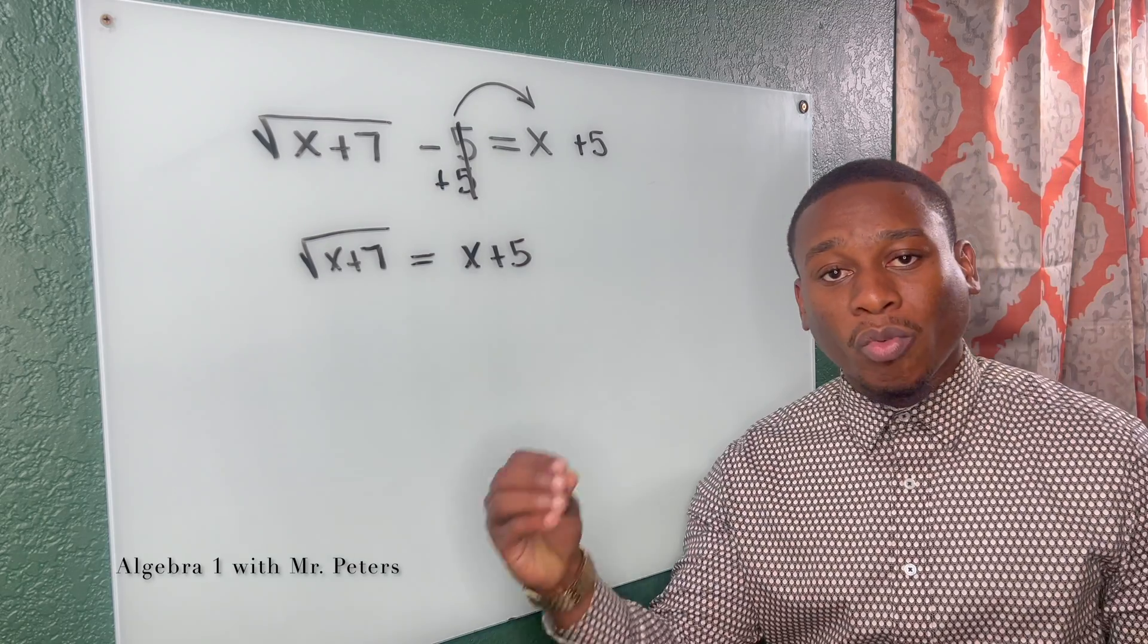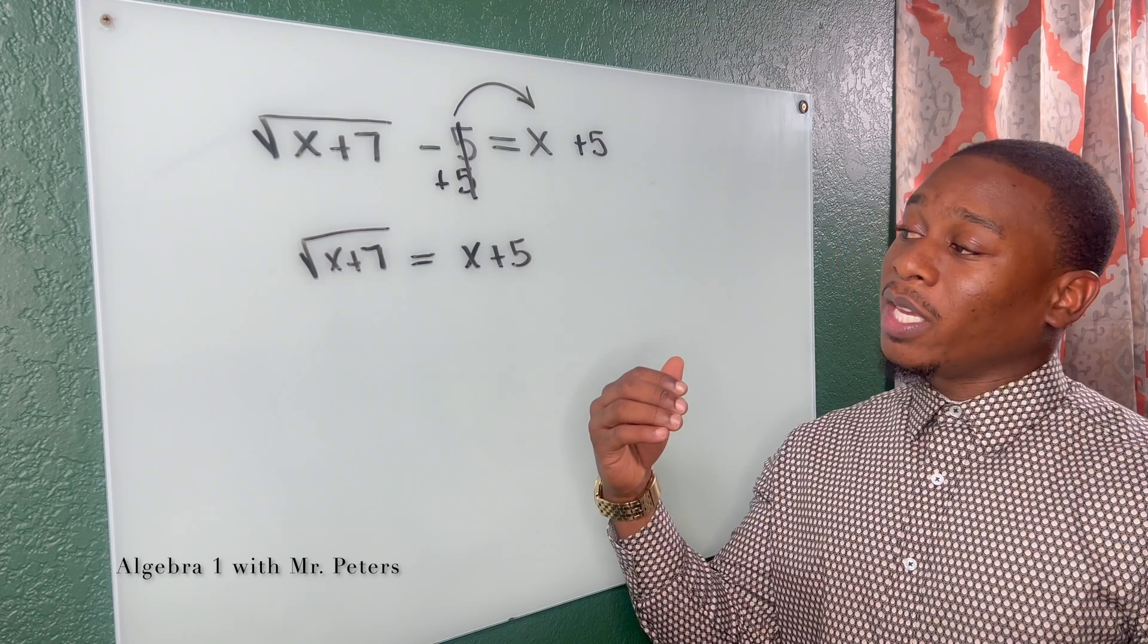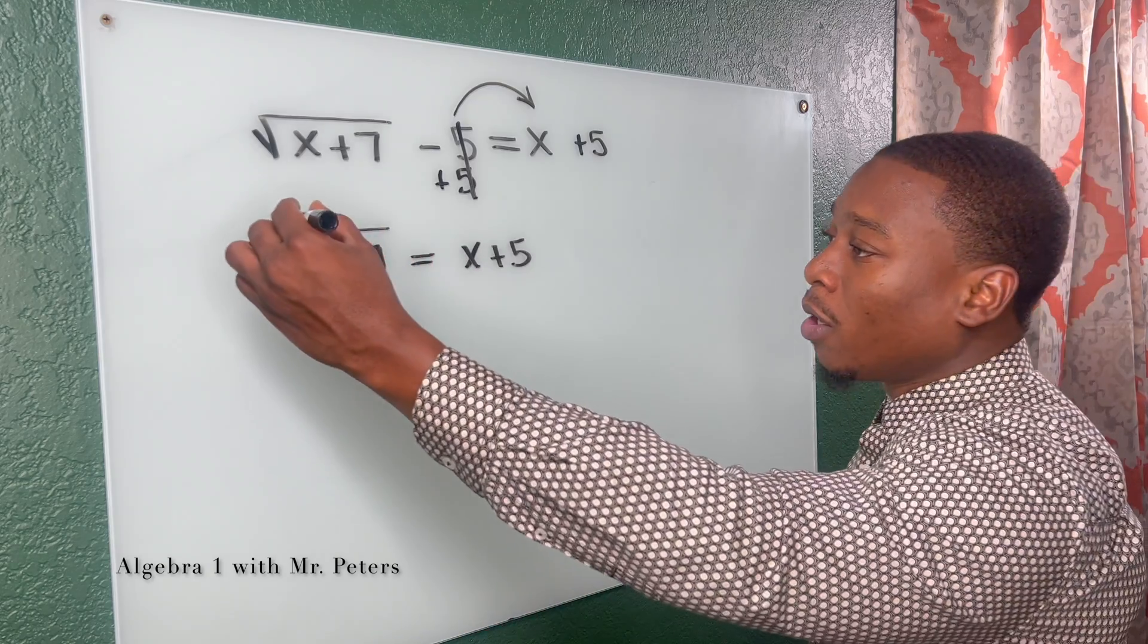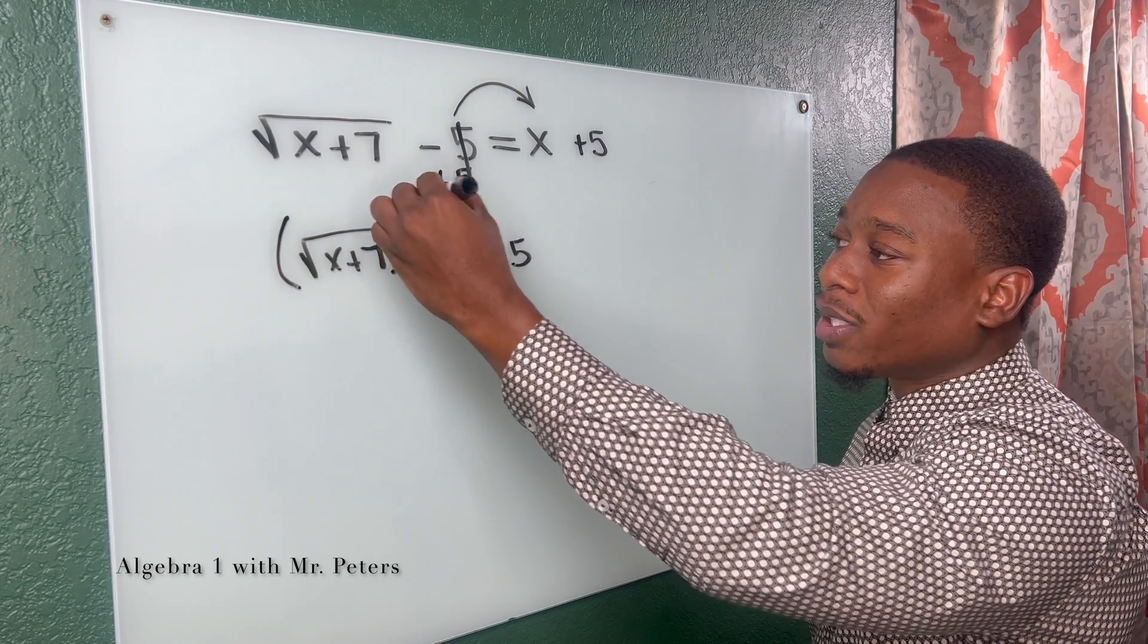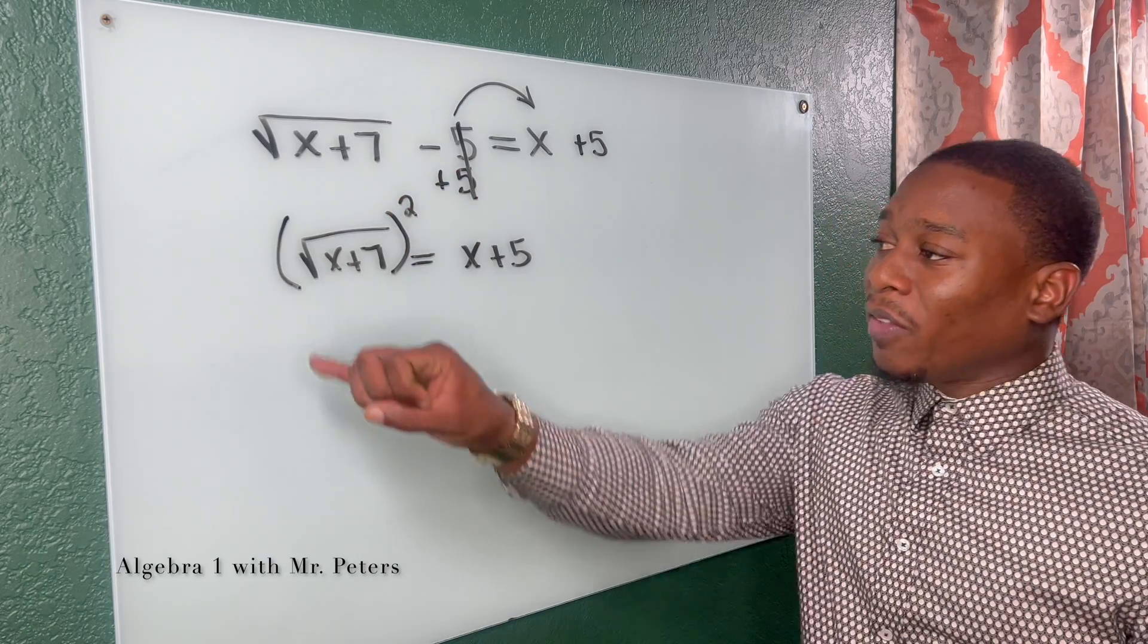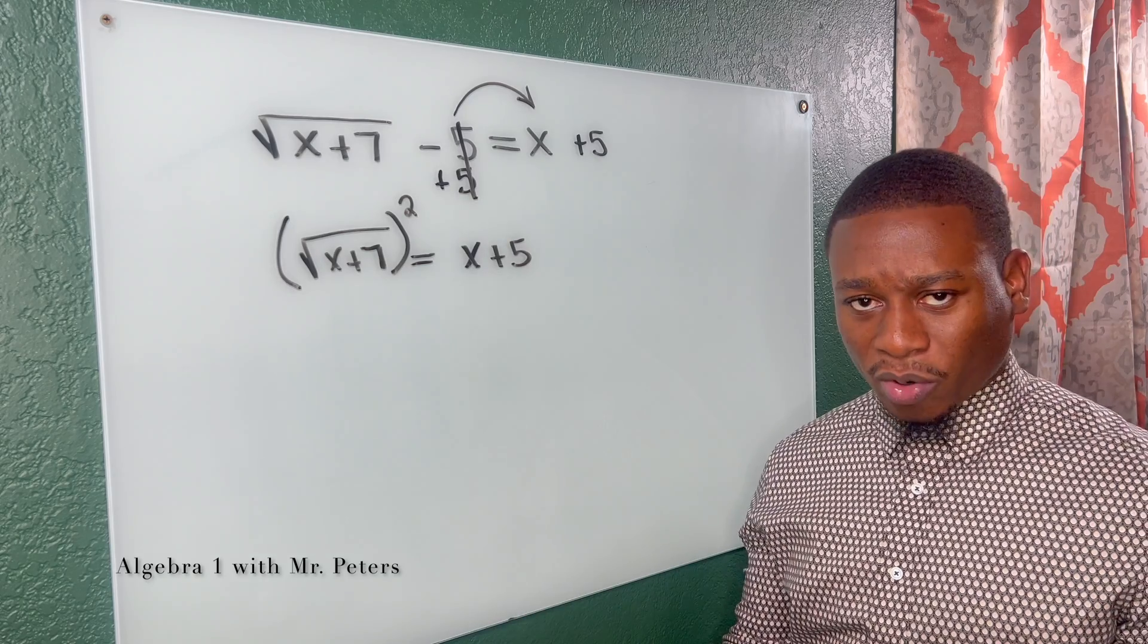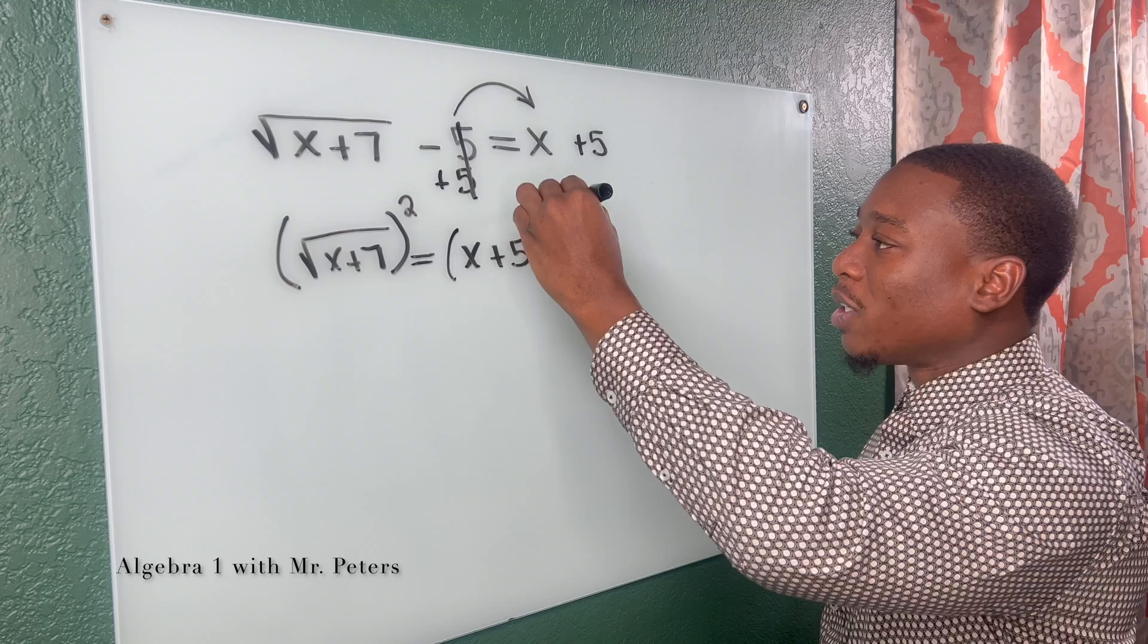So now the radical is by itself. And for us to get rid of a radical, we have to square it or take it to its root power. So what do I mean? Because there's no root right here, we know that it's two. So I'm going to take this to the second power. If this was a cube root, then I would take it to the third power to get rid of the radical. That's all that means. So I go on the other side and I do the same exact thing.